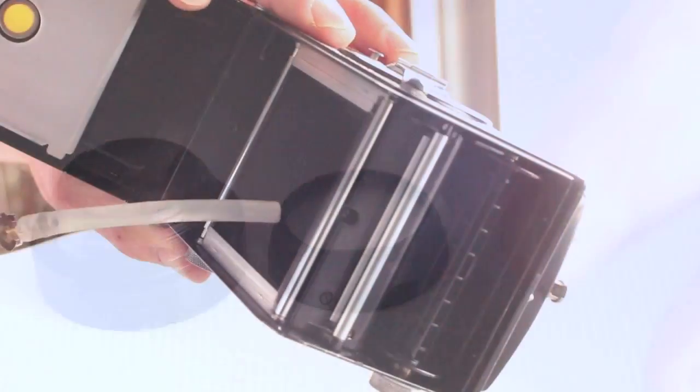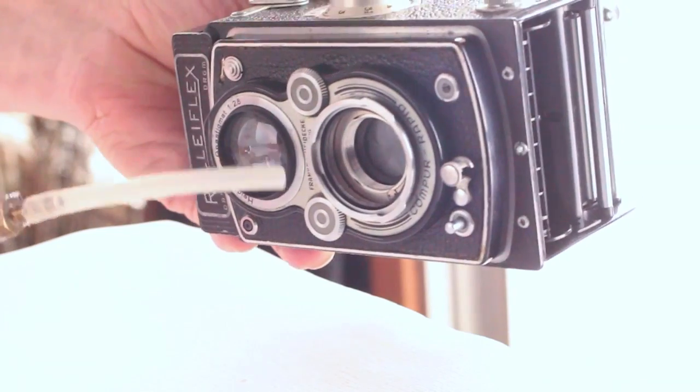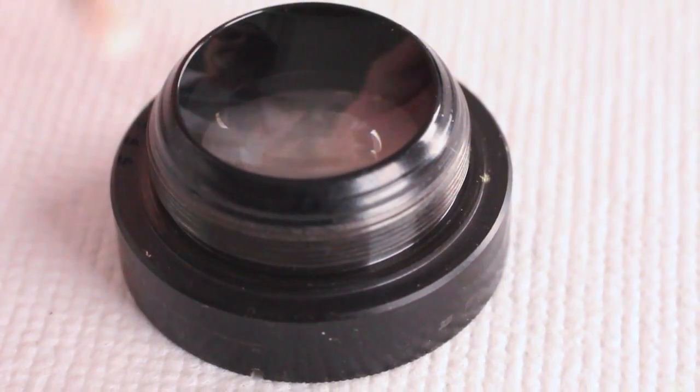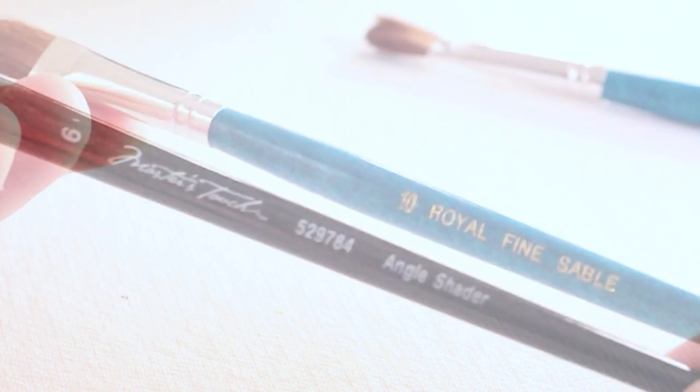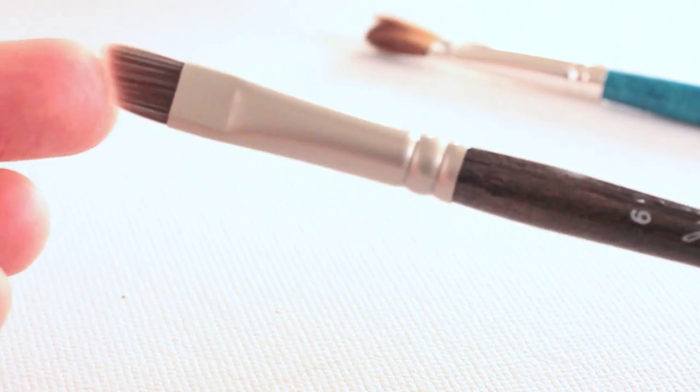Stubborn dust specks can be removed with a gentle blast of air and/or a soft natural bristled brush. A number 9 or 10 angle cut artist brush works well.